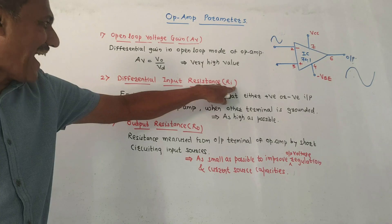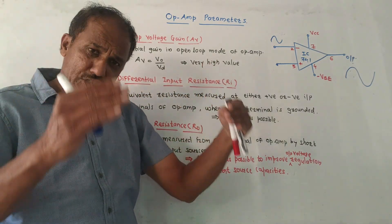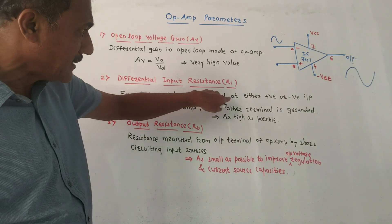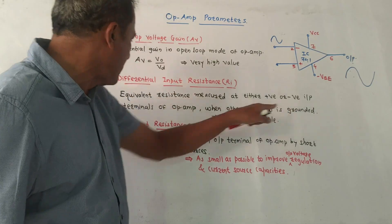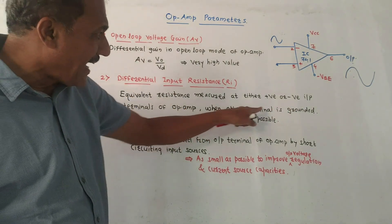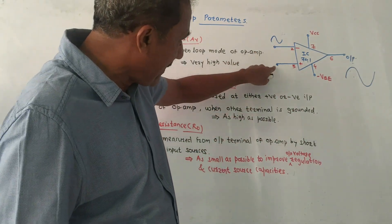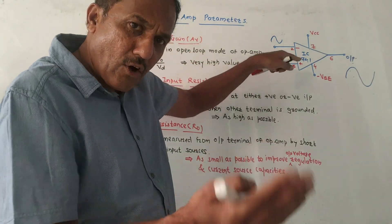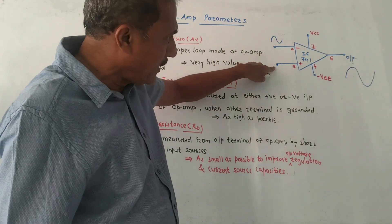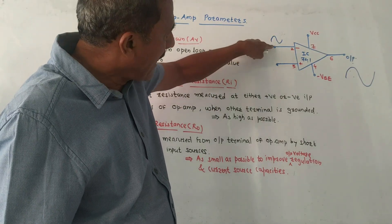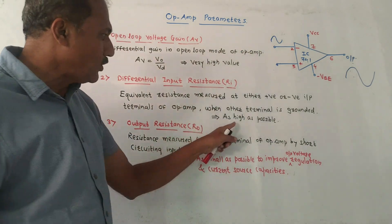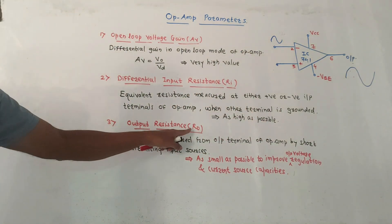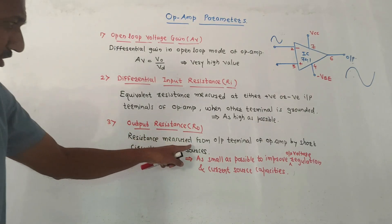The second parameter is differential input resistance, denoted by RI. As the name indicates, it is the resistance at the input side — the equivalent resistance measured at either the positive or negative terminal of the op-amp when the other terminal is grounded. You can measure input resistance at pin number 3 while grounding pin number 2. This value should be as high as possible.